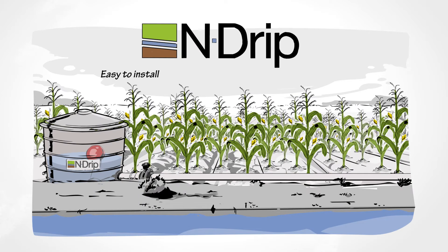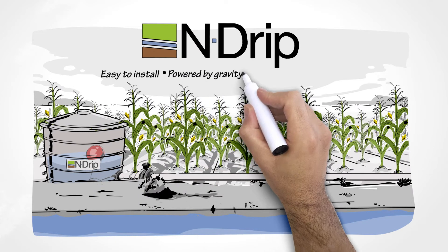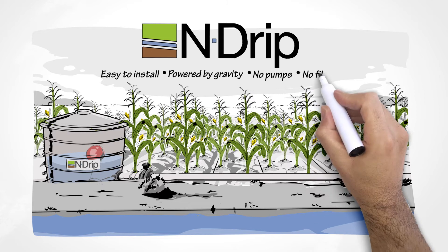Easy to install, Endrip is a micro-irrigation system powered by gravity only. No pumps or filters are needed.